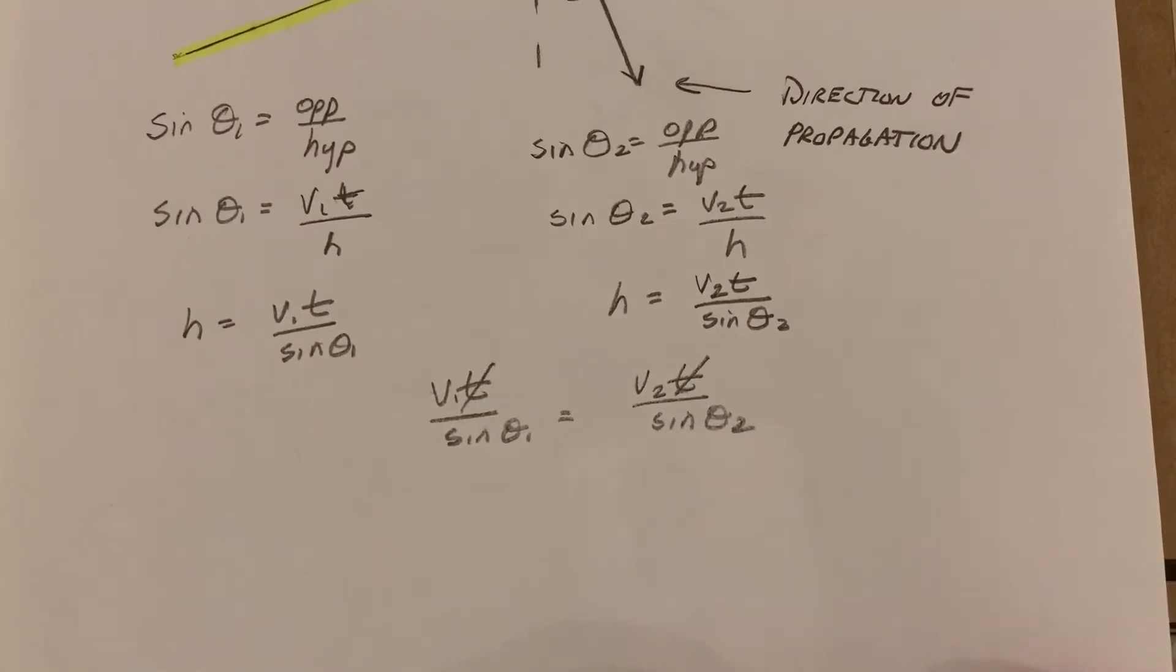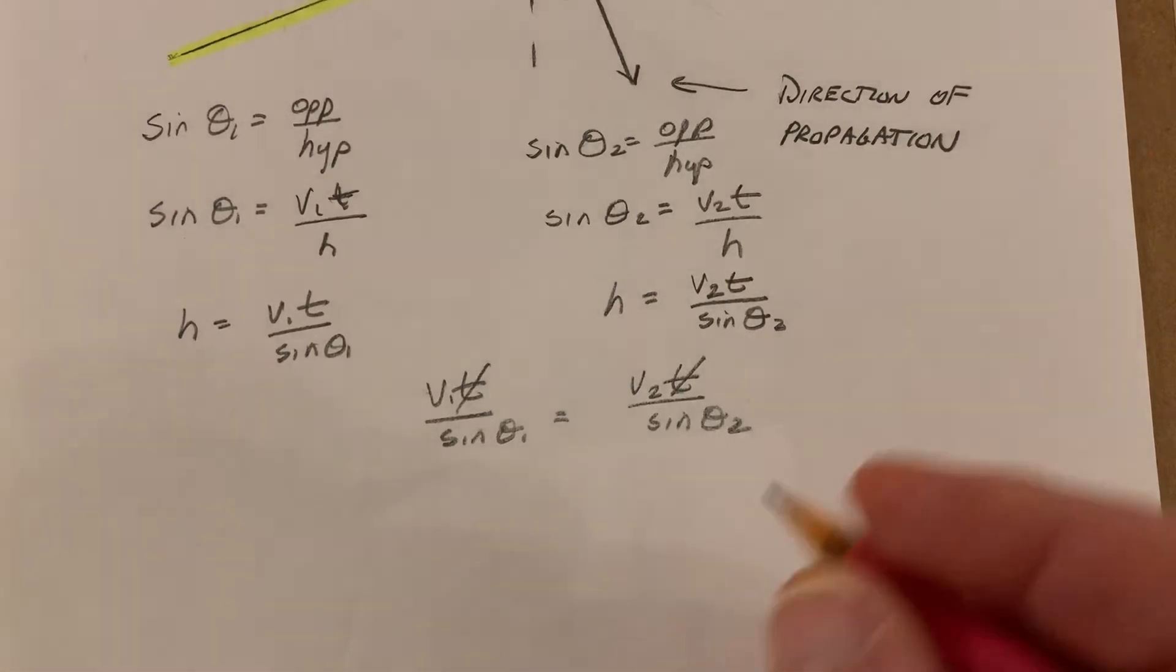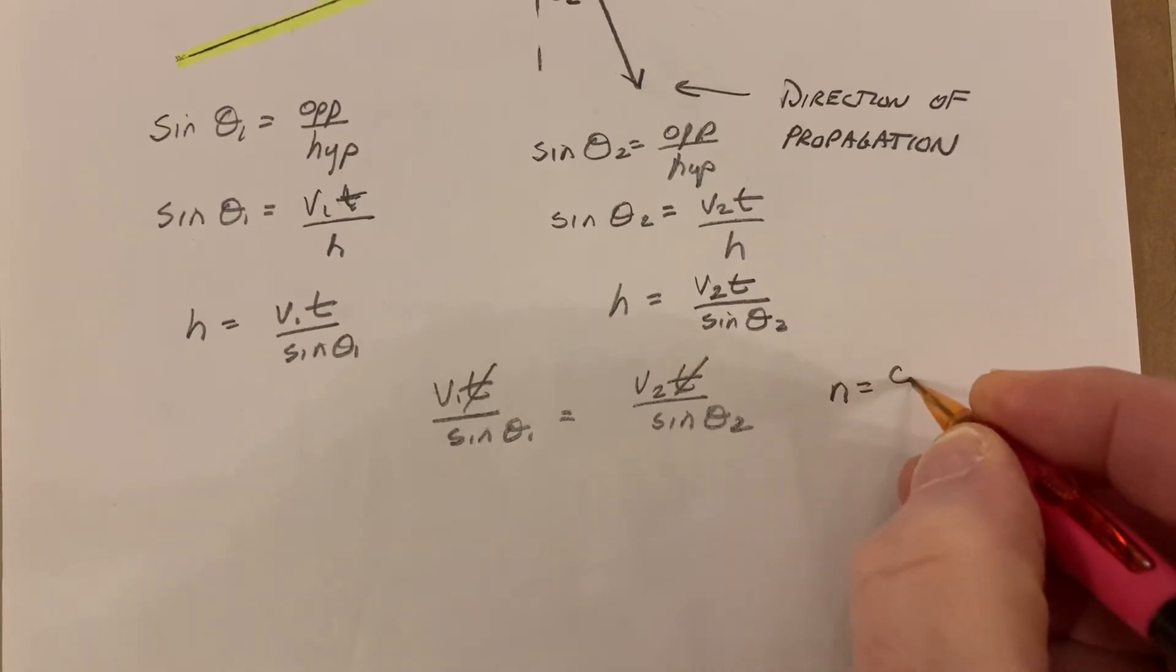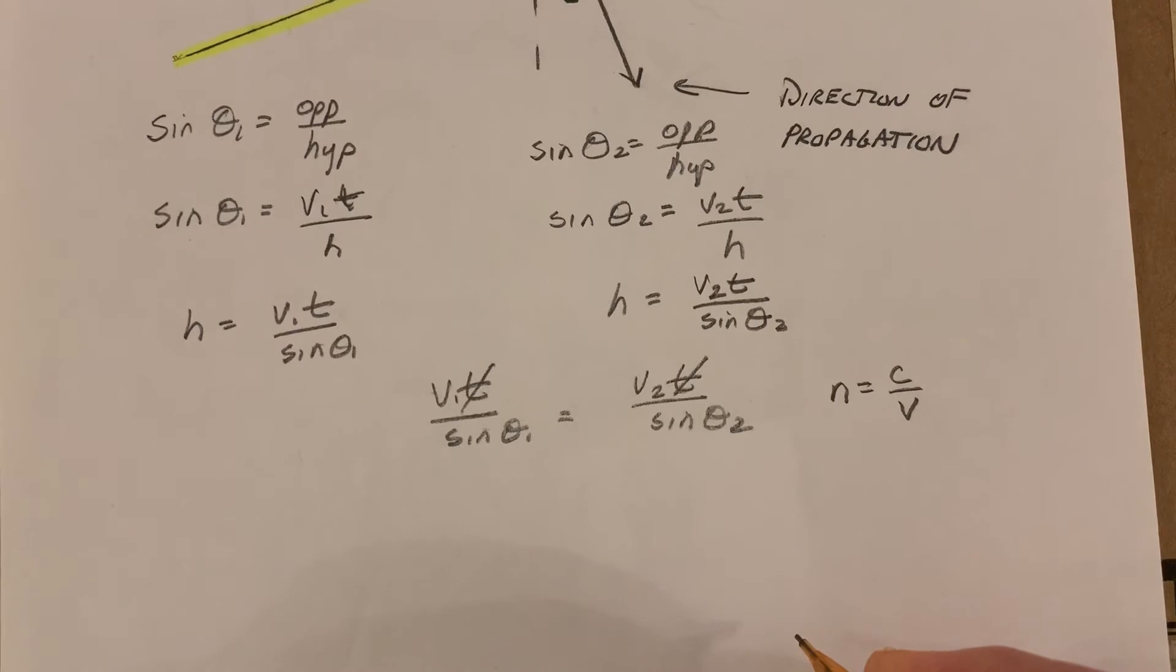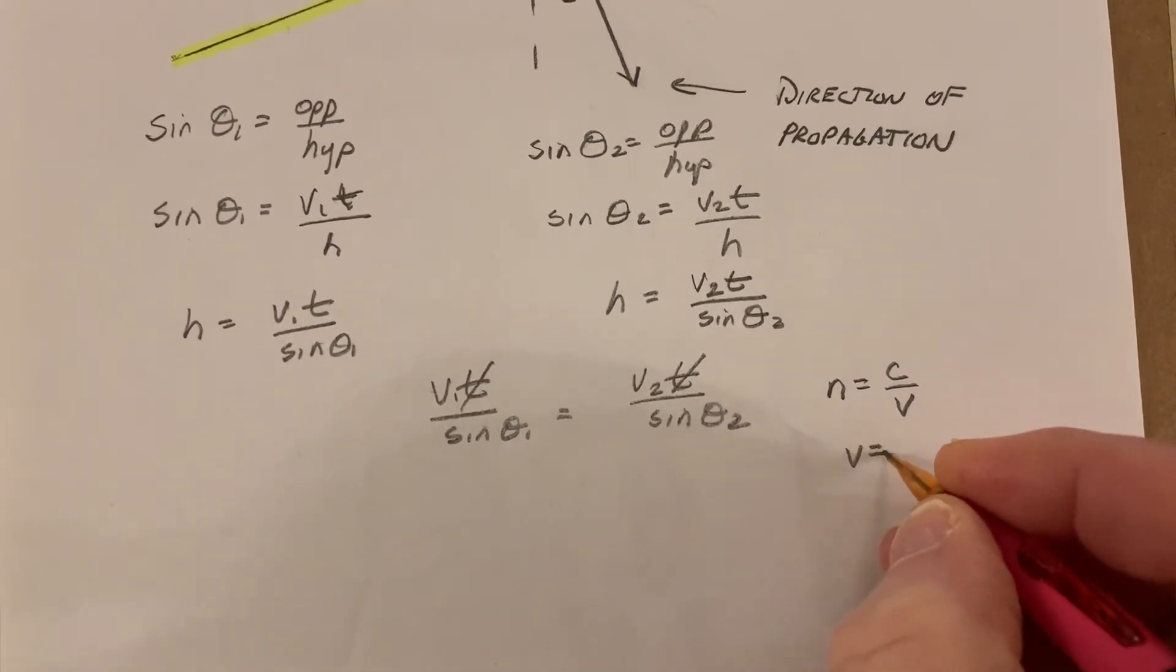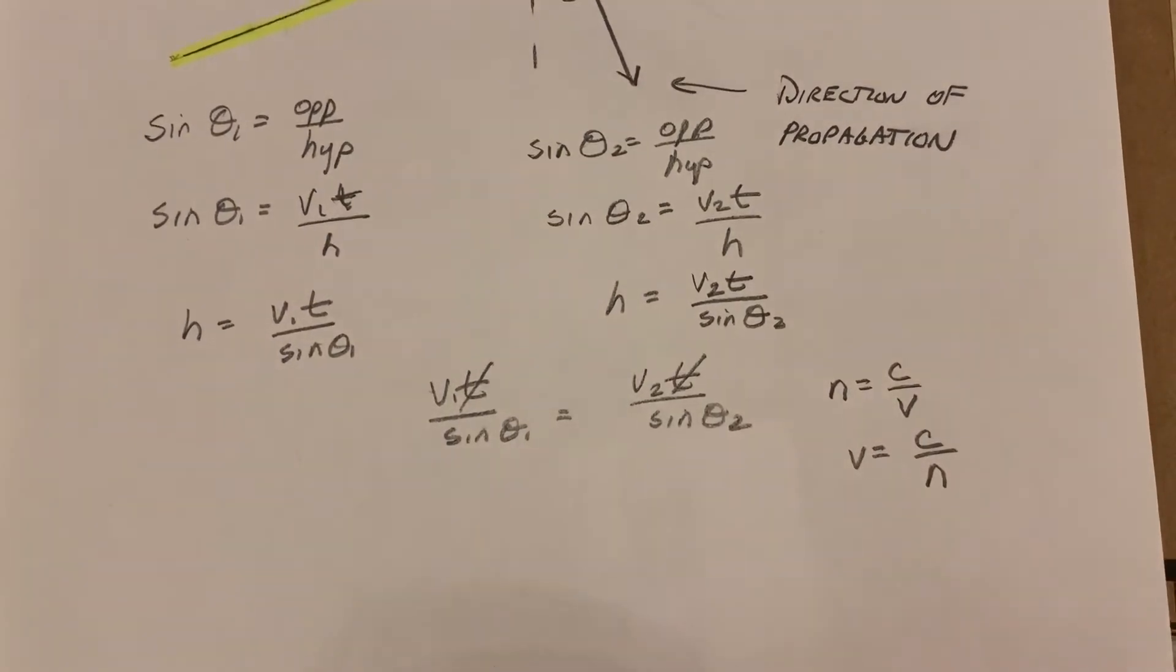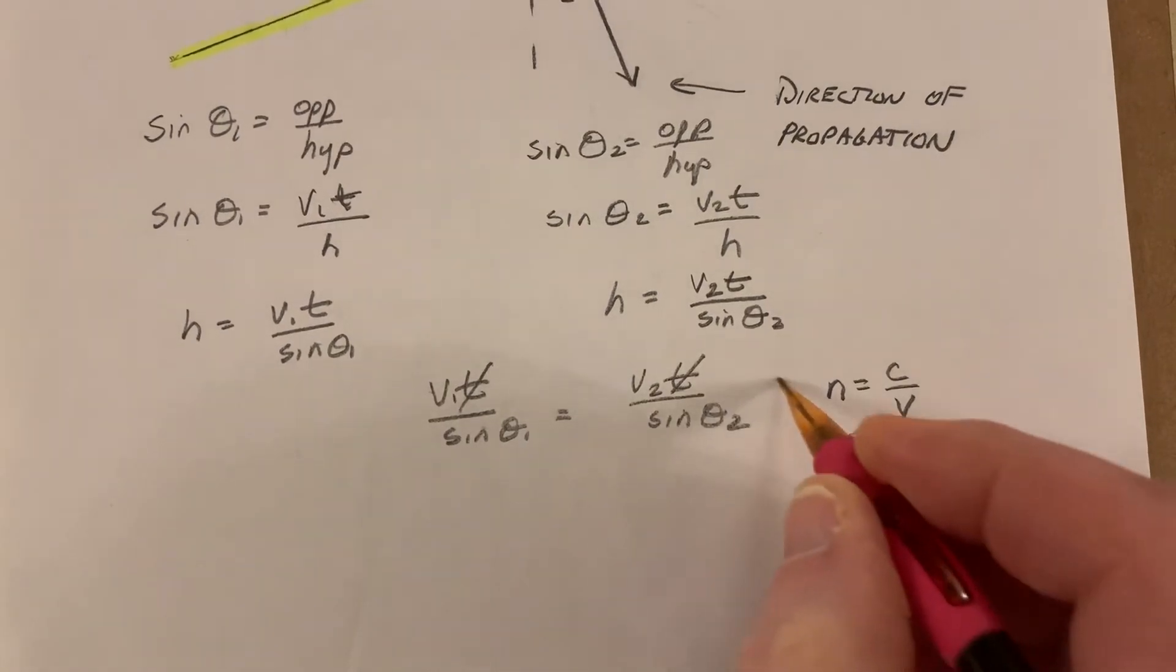Now, we happen to know that because we're dealing with the indices of refraction, our index of refraction is equal to the speed of light divided by the velocity. Or, I can rearrange that. My velocity is equal to my speed of light divided by the index. And I'm going to put this in here for both of these velocities.